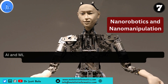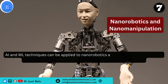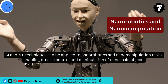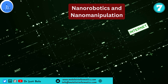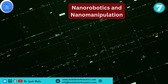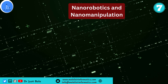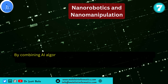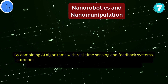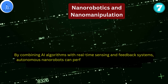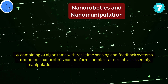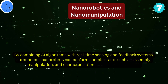Lastly, AI and ML also play a significant role in nanorobotics and nanomanipulation. These techniques can be applied to nanorobotic and nanomanipulation tasks, enabling precise control and manipulation of nanoscale objects. By combining AI algorithms with real-time sensing and feedback systems, autonomous nanorobots can perform complex tasks such as assembly, manipulation, and characterization of nanoscale structures, facilitating advancements in nanomanufacturing and nanoscale engineering.